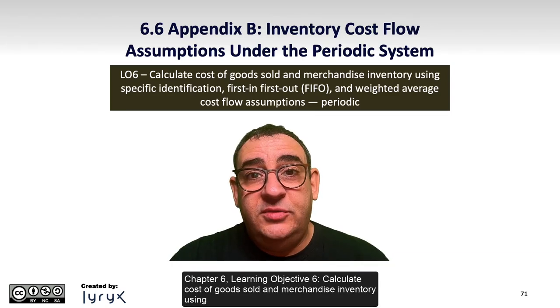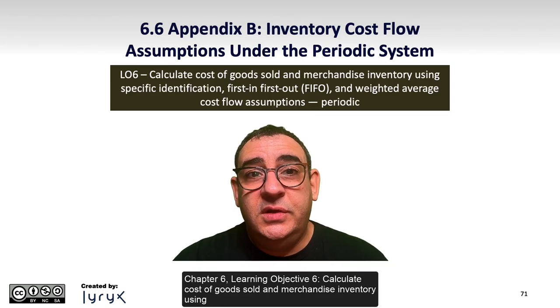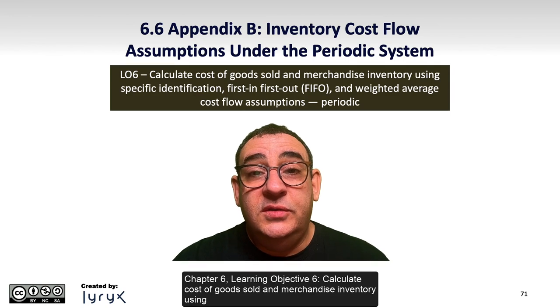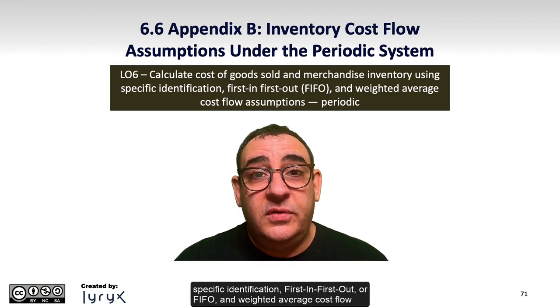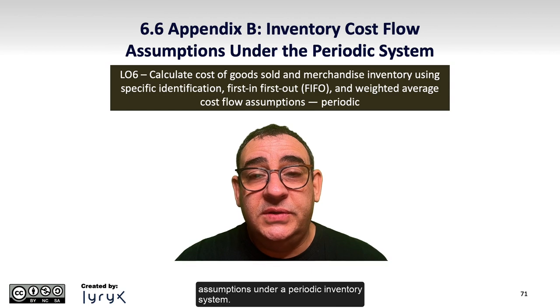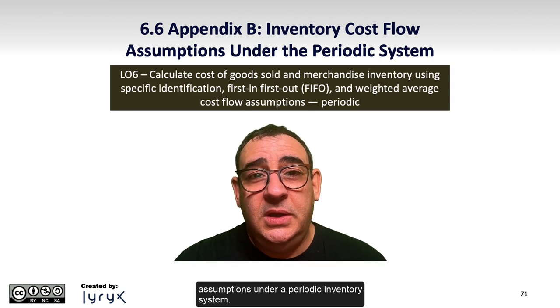Chapter 6, Learning Objective 6: Calculate cost of goods sold and merchandised inventory using specific identification, first-in first-out or FIFO, and weighted average cost flow assumptions under a periodic inventory system.